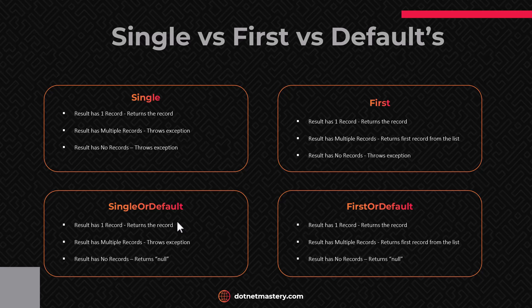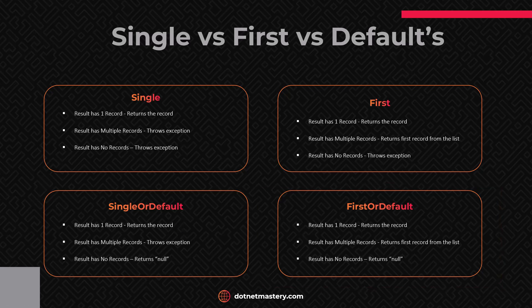Now, what should you use in your application? As you can see, FirstOrDefault is the one that will not throw an exception — it will return null, or if it has more than one record it will simply retrieve the first record. I personally prefer using FirstOrDefault rather than Single, SingleOrDefault, or First. But if your business scenario requires validating or throwing an exception when there are no records, then you can select the appropriate one.